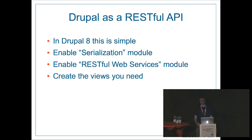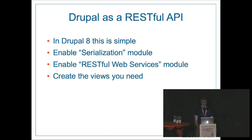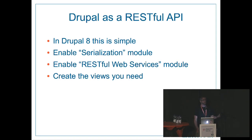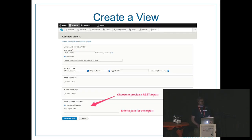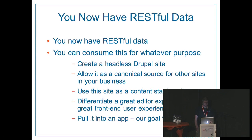If you were to build a RESTful API in Drupal 7, you need about five modules — Views Data Source, JSON something, RESTful Services, and a few others — and you patch them together to get a JSON feed. In Drupal 8, you turn on the Serialization module and the RESTful Web Services module, then create a view. Instead of a view of type page or block, you create a view of type RESTful Export, give it a name, a description, and set the path — like slash news slash JSON — and that's it. That's all you need to do to build the RESTful API in Drupal 8.